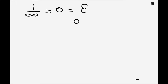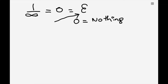Zero is something which equals to nothingness, but we want a number which is very, very, very small. That number is epsilon, which is the infinitesimal. If you go to higher school, we have the concept of limits.